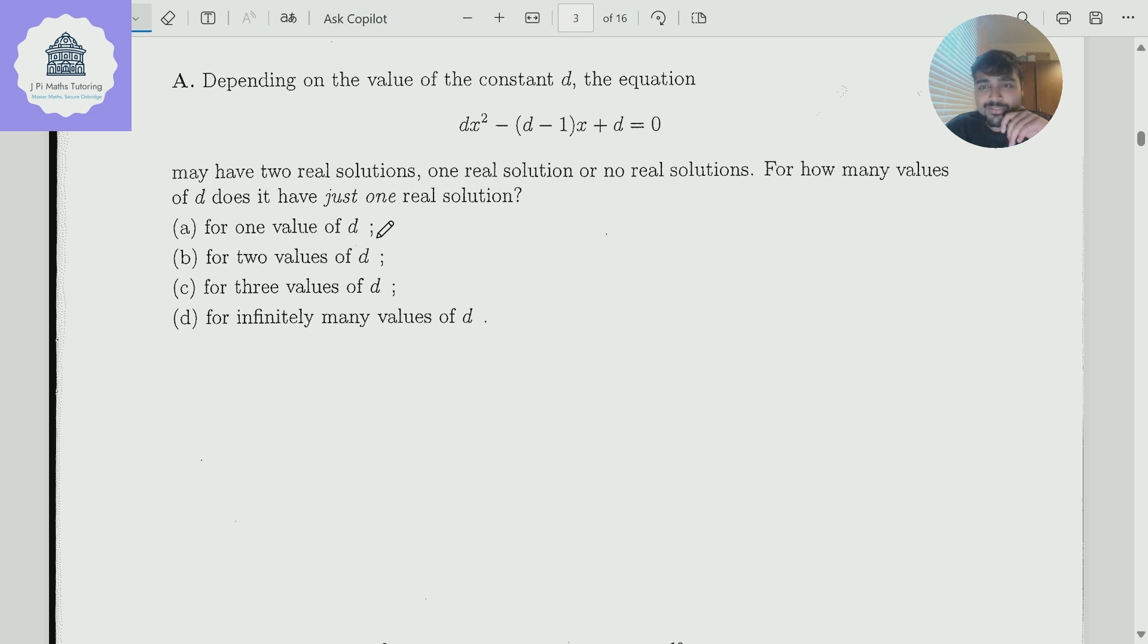Depending on the value of the constant d, the equation dx squared minus (d-1)x plus d equals 0 may have two real solutions, one real solution, or no real solutions. For how many values of d does it have just one real solution? And the answer is either 1, 2, 3, or infinitely many values of d.